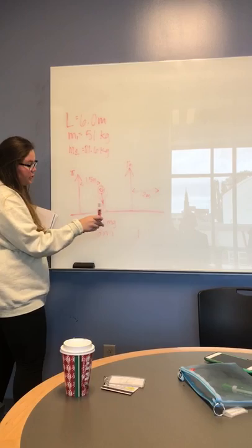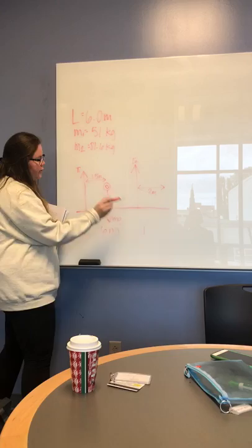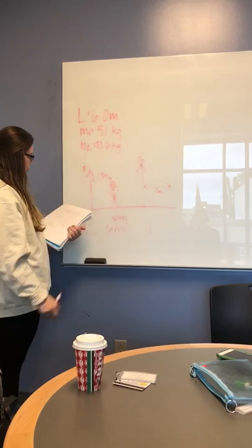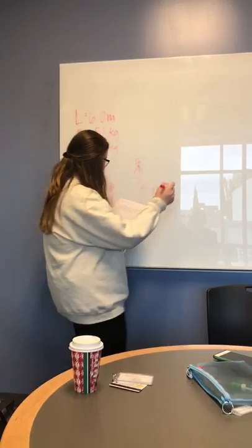Gravity is working down against him, so the center of gravity is right here, and then we have two ropes on each side. We need to find the tension of the first one and the second one.